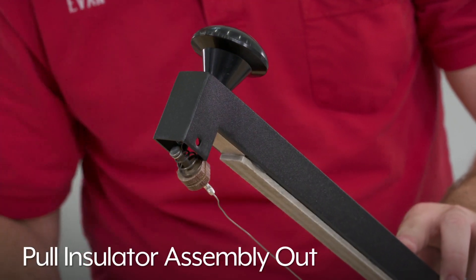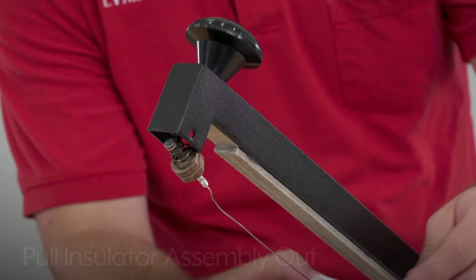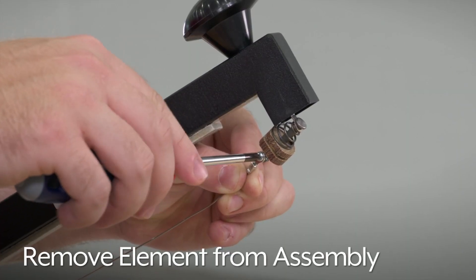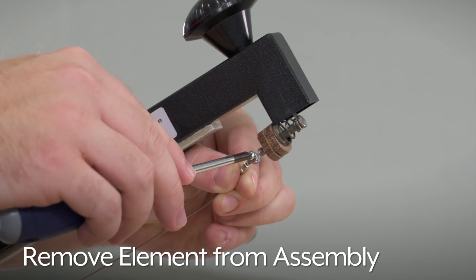Pull the insulator assembly out of the end of the sealing arm, then remove the white plastic insulator sleeve. Using a Phillips screwdriver, remove the screw that secures the element to the assembly.